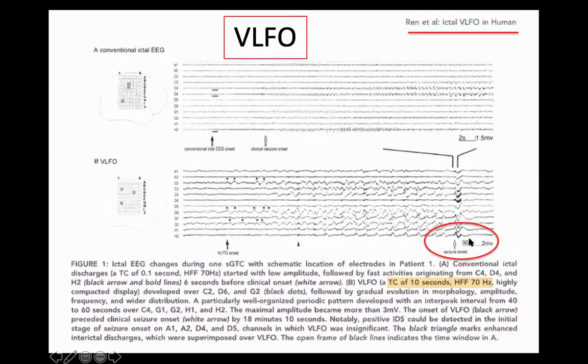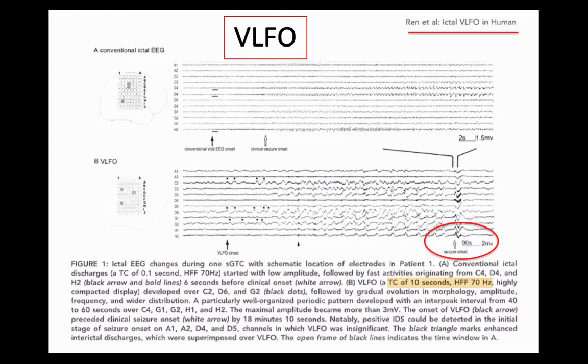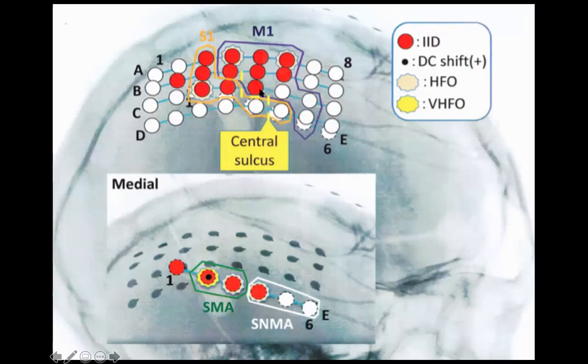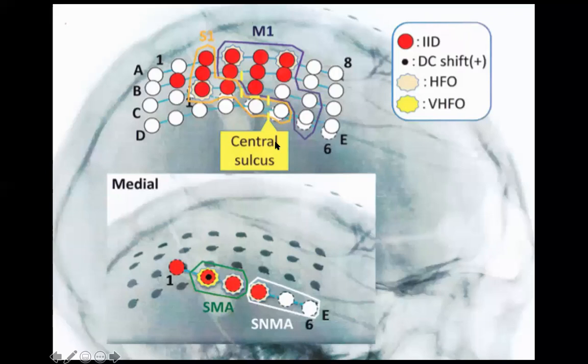These are the cortical mapping results in Shizuoka. Besides functional mapping, they also map areas with interictal discharges (IID), HFO, VHFO, and DC shift. This is done in almost every patient in Shizuoka whenever they are doing intracranial monitoring with subdural grids. After our visit we set up our own monitoring protocol accordingly.